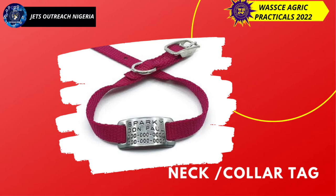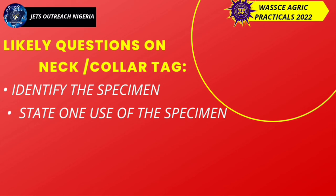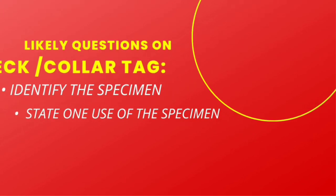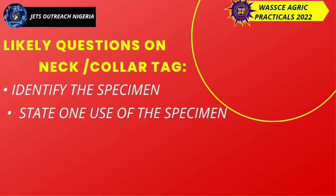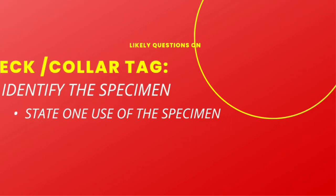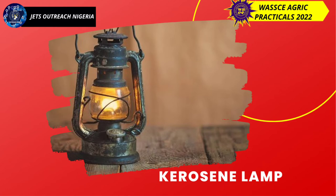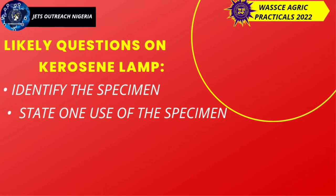Next is the neck or collar tag. Likely questions: identify the specimen, state one use of the specimen. Your answer: the neck or collar tag is used in the identification of animals. Next is the kerosene lamp. Identify the specimen, state one use. It is used to provide light on the farm.